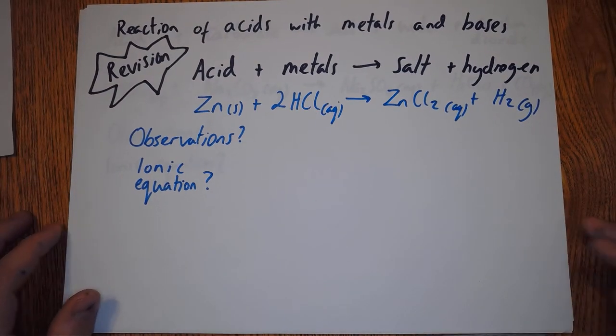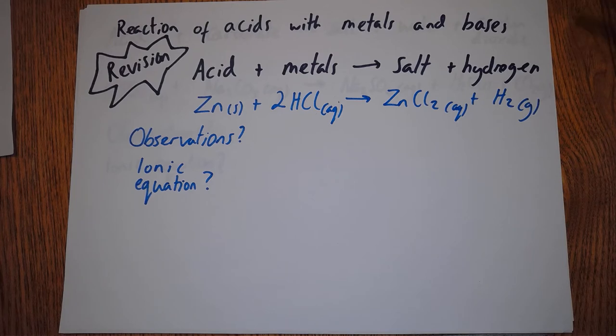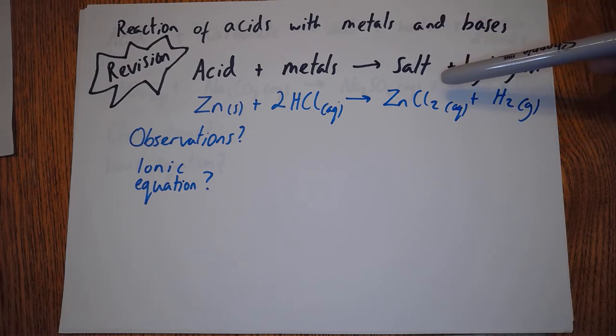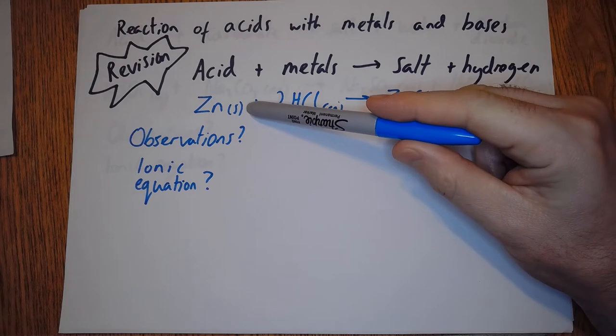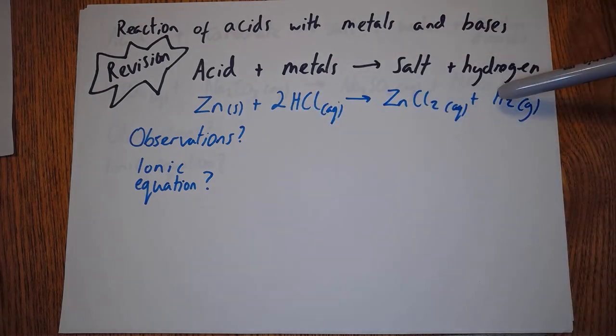Now a bit of revision of reactions of acids with metals. Acid plus metal makes salt plus hydrogen. Here's an example with zinc and HCl - we've got zinc chloride and hydrogen gas being given off. What observations will we expect to see here? Well, we've got a solid on this side, no solid on the right, so a solid is dissolved. We're also forming bubbles, so we're going to see bubbles in the solution.